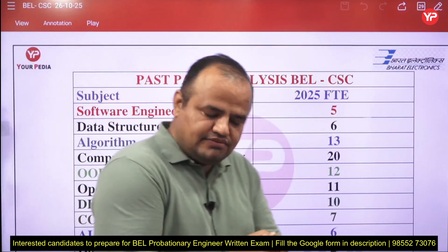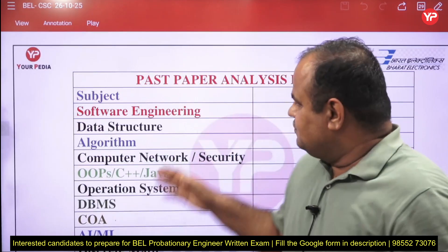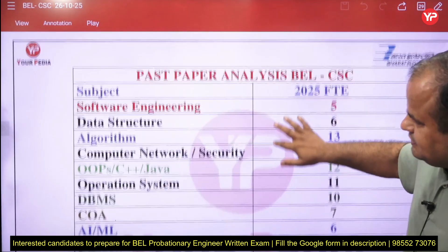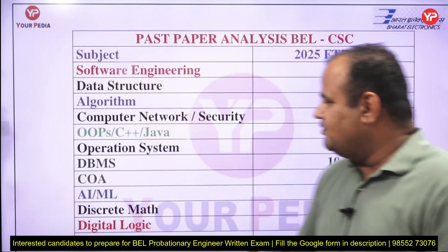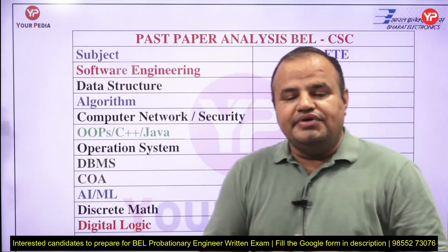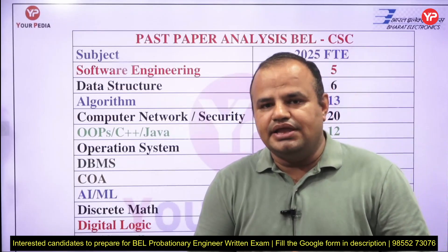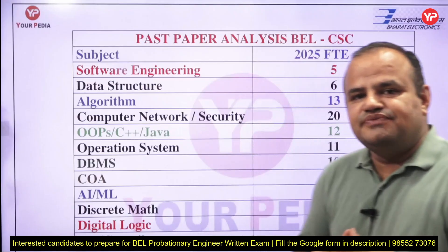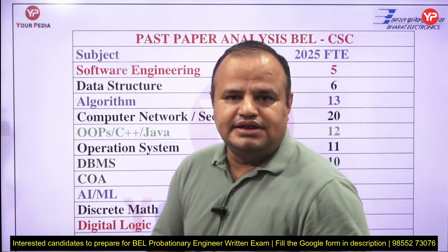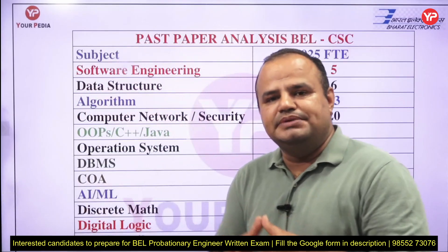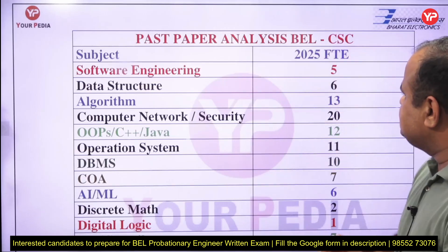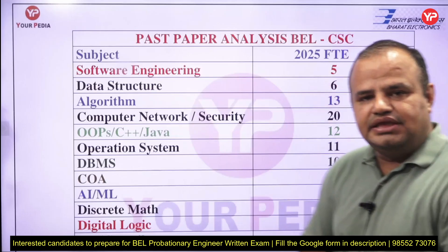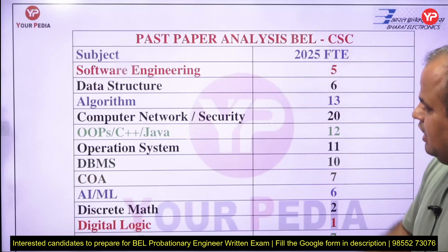In that paper, a list of subjects you can see here. Software engineering, data structure, algorithm, DBMS — all these subjects are very important in that exam. For the current PE exam, you can find one-line questions which are very straightforward. Instead of preparing for in-depth analysis, you just need to read the basic definitions, basic terminology, characteristics, and properties. This past year paper is for the post of FTE — fixed term engineer post.